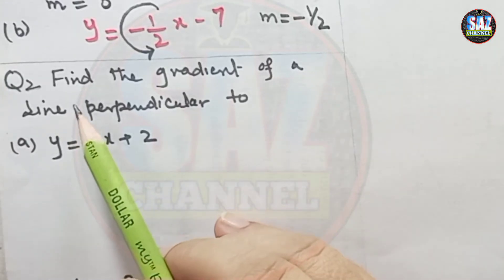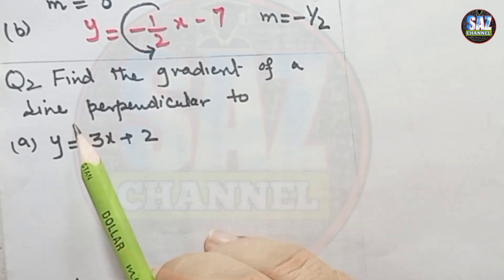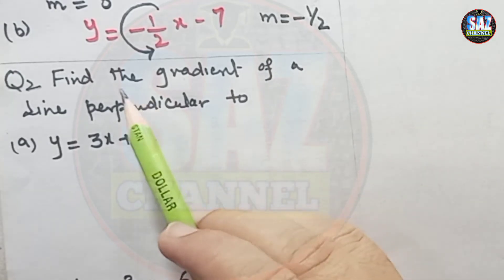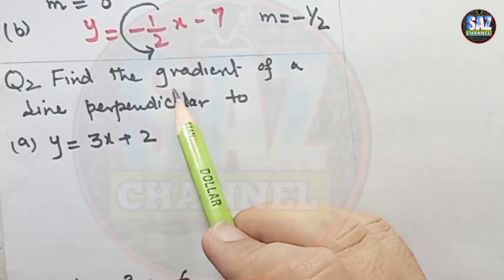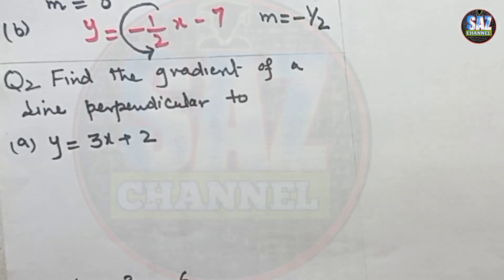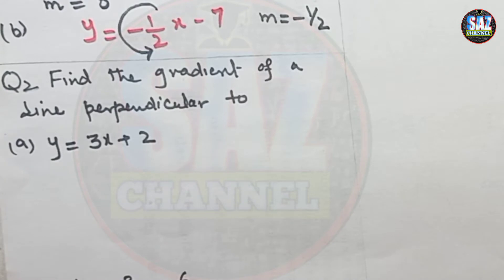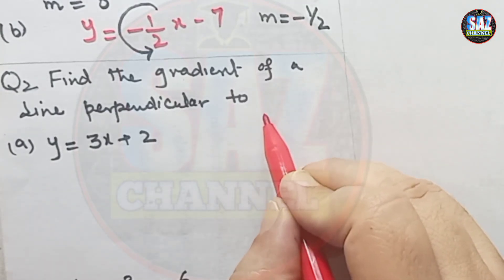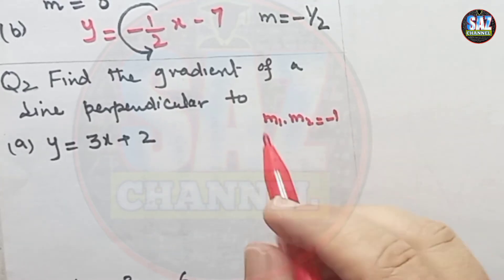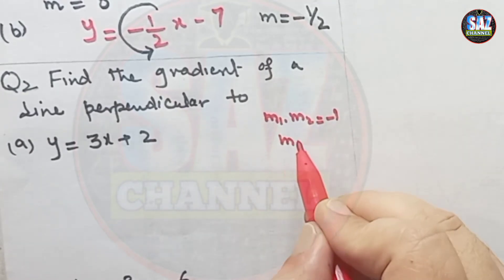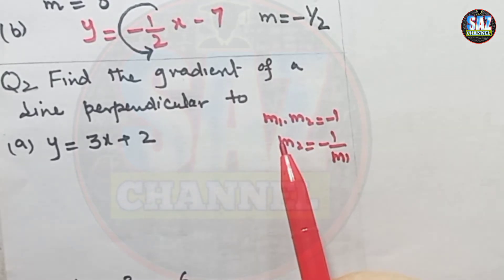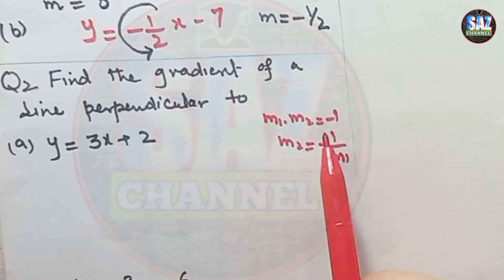In question 2, the question says: find the gradient of a line perpendicular to the given lines. It is important to understand that we have to find the gradient of a line which is perpendicular to the given line. The condition we know is that two lines will be perpendicular if m1 multiplied by m2 equals minus 1, or m2 equals minus 1 over m1. This is the relationship between the gradients of two perpendicular lines.